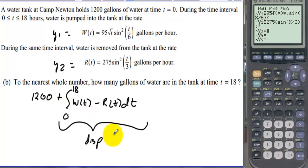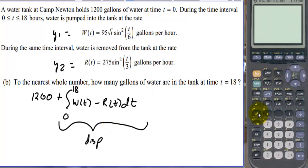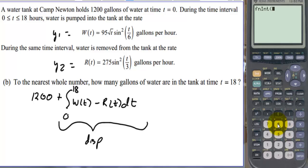It could be up 50 gallons or down 10 gallons — that's what we're going to find out. Let's go to Math number 9 and integrate.